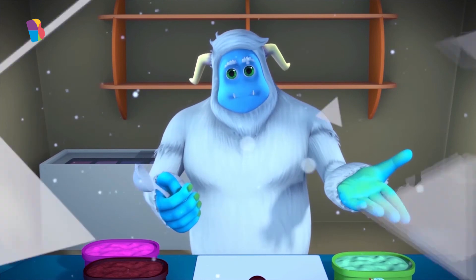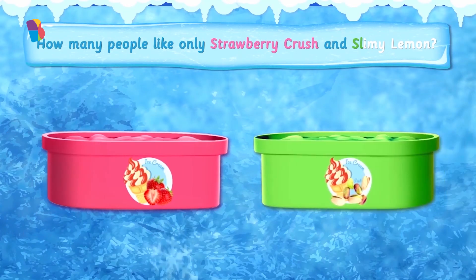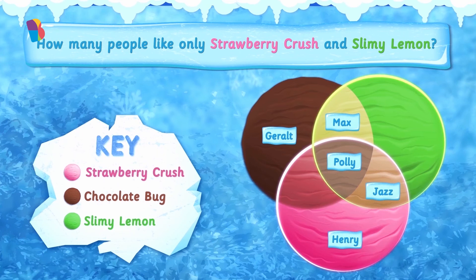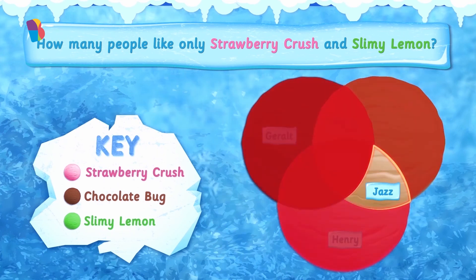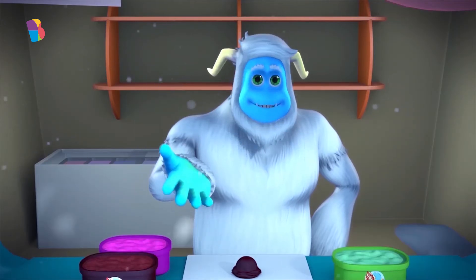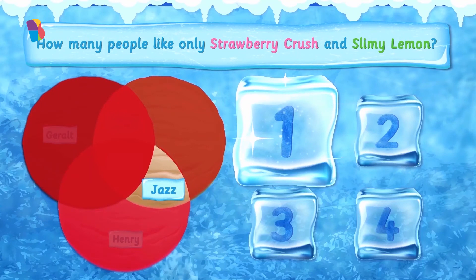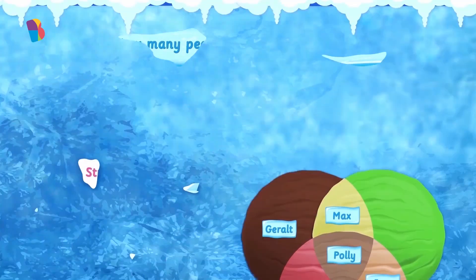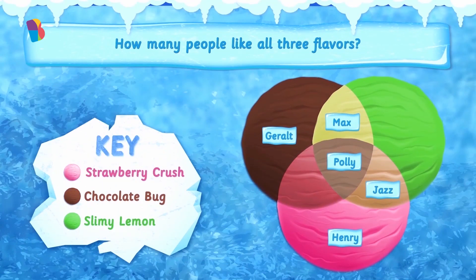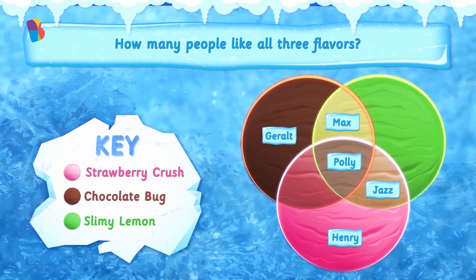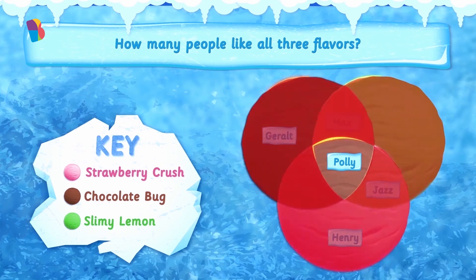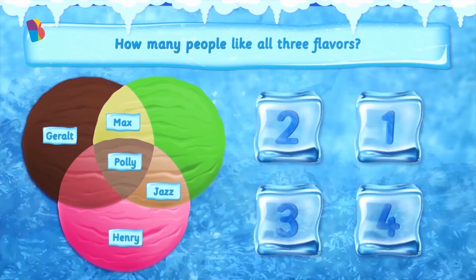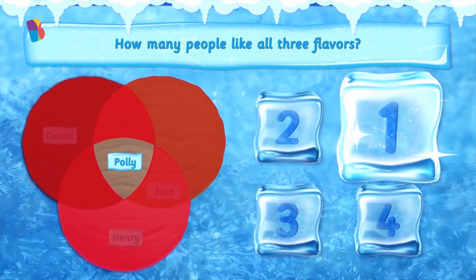Now, how many people like both strawberry crush and slimy lemon? If they like both strawberry crush and slimy lemon, then we have to look at all the friends in the overlapping portions of the pink and lime green circles. Can you tap on the correct answer for me? Yes, that's just one person. And last, I'd like to know how many people like all three flavors. If they like all three, then we have to look at the overlapping portion of all three circles. Can you tell me how many by tapping on the correct answer? Yes, that's just one person.